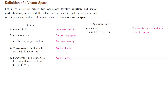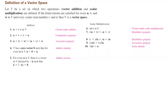It is closed under scalar multiplication — if you take a real number c and a vector u in the set, then c times u is also in that set. Distributive property: c can be distributed over addition, so c(u+v) = cu + cv. Also, (c+d)u = cu + du. Grouping doesn't change multiplication: c(du) = (cd)u — that's the associative property. And 1 times u equals u, which is called scalar identity.